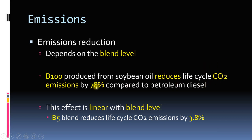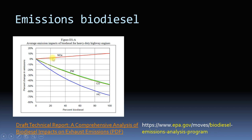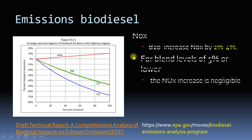Regarding lifecycle emissions of CO₂, for B100 they are 78 percent less compared to petroleum diesel. Since we use blends, B5 will have proportionally lower CO₂ emissions — this is a linear variation, so B5 would be about 78/20 ≈ 4 percent reduction. For other emissions: particulate matter, carbon monoxide, and hydrocarbons are reduced when using biodiesel, whereas there is a small increase in nitrogen oxides (NOx). For B20, NOx increases by two to four percent, but for B5 the increase is negligible — this data is from the EPA.